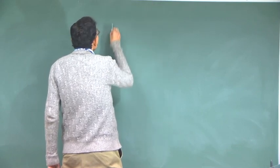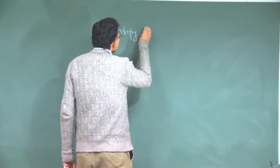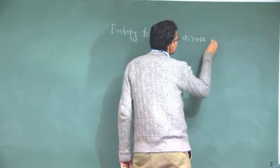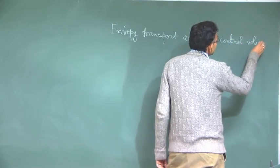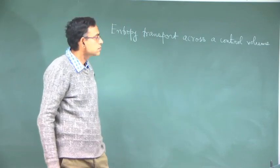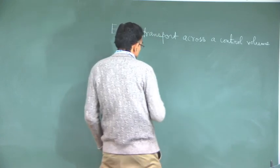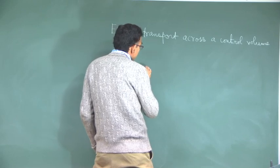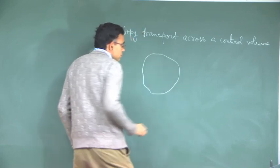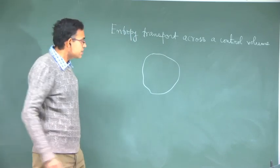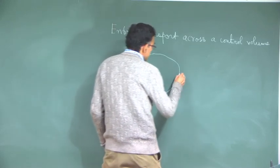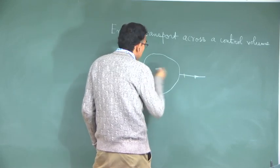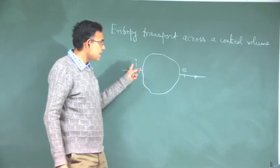Consider entropy transport across a control volume. There is a control volume, and across this control volume there are some inlets and exits. We symbolize the inlet as I and the exit as E.